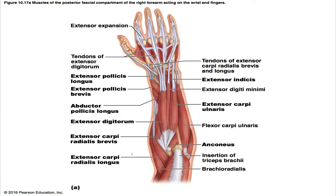The first superficial muscle is the extensor carpi radialis longus, which parallels the brachioradialis on the lateral forearm and may blend with it. Its origin is the lateral supracondylar ridge of the humerus, and its insertion is the base of the second metacarpal. Its prime actions are to extend and abduct the wrist — it extends the wrist in conjunction with the extensor carpi ulnaris and abducts the wrist in conjunction with the flexor carpi radialis. It is innervated by the radial nerve.